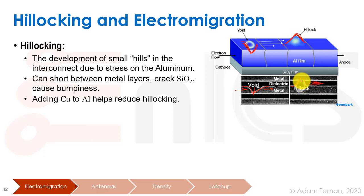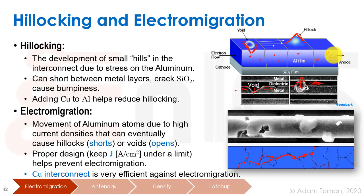Similarly, if a hillock gets too big and cracks through the interlayer dielectric, we get a short circuit between two separate nets. This is a really bad phenomenon. One of the ways to prevent it is by adding copper atoms into the aluminum field — it makes the aluminum stronger against hillocking.